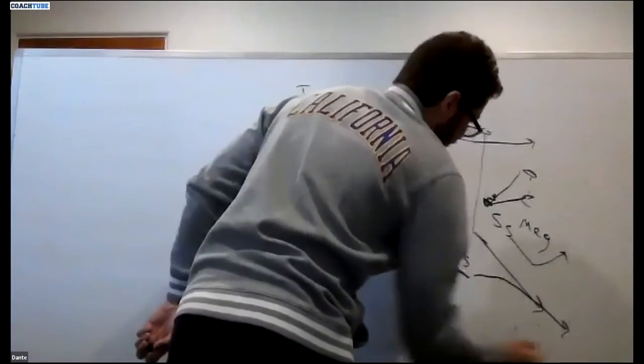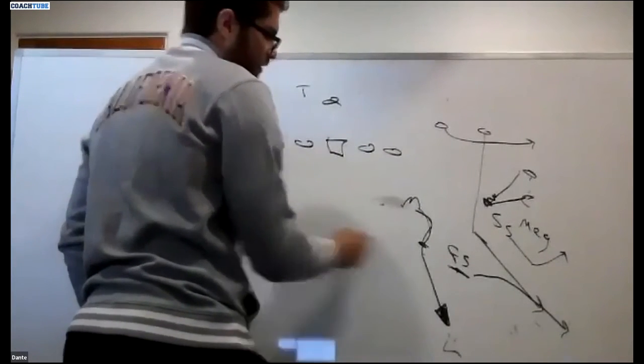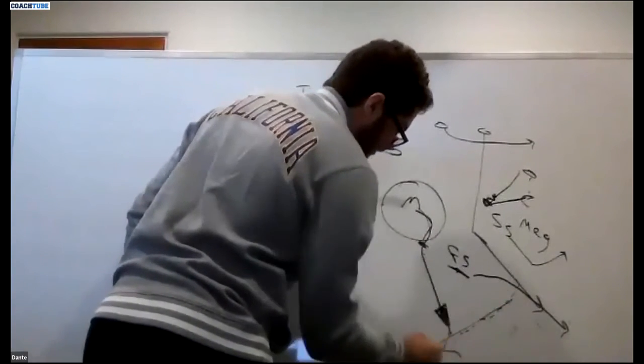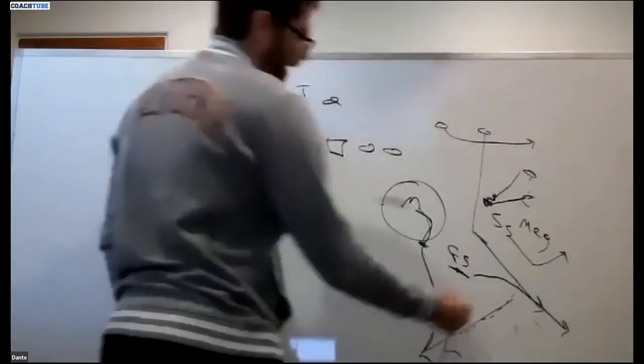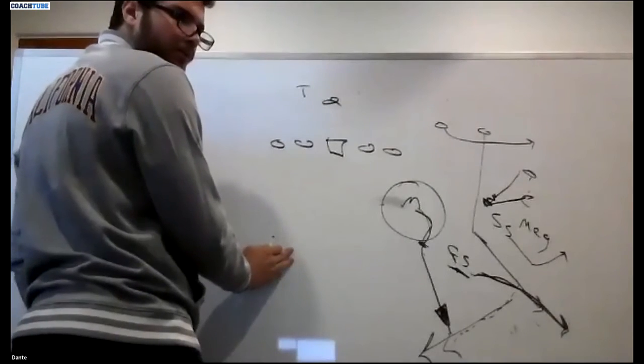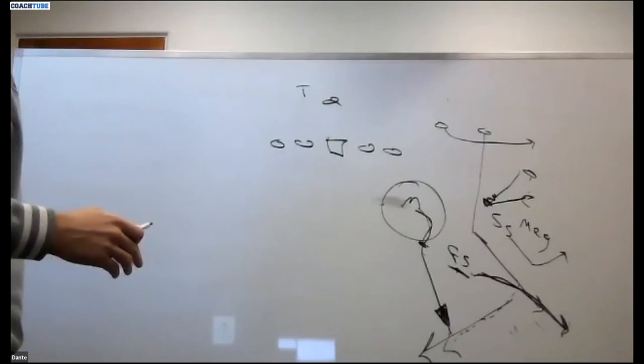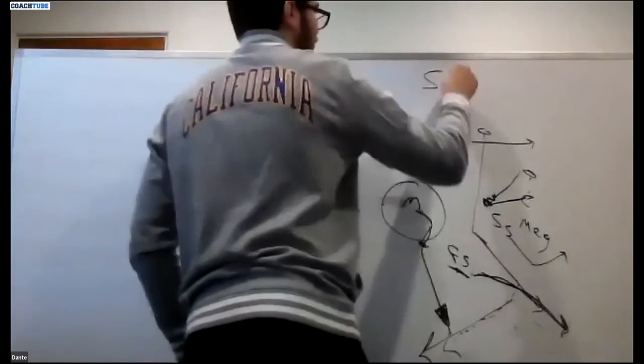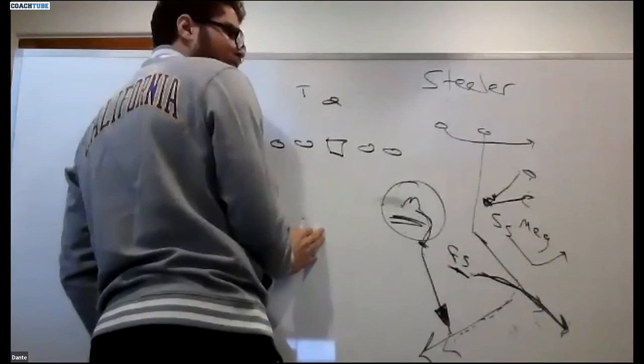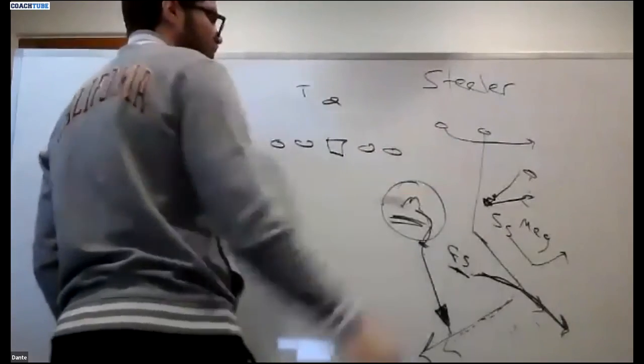He can over drop and get outside of the number two receiver because he knows if they run the bang eight, the Mike Backer is going to be behind him to take the bang eight. So now we have a chance versus the corner route to win the down because I can aggressively push for depth and width outside the number two. That's why I prefer to play Stealer with the Mike carrying the number three and cutting the number two, then zoning up or rerouting the number three on the vertical and then zoning when number three is out.